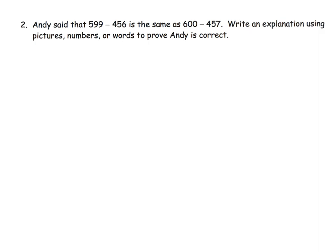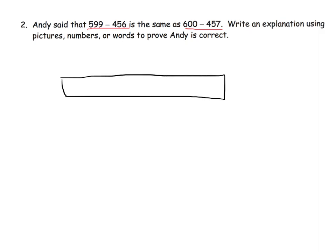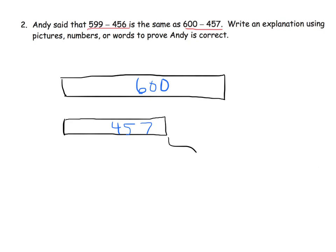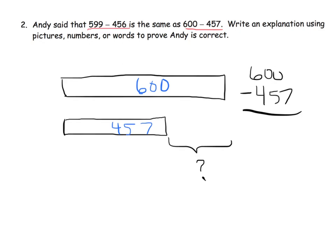Our last problem: Andy says that 599 minus 456 is the same as 600 minus 457. Let's start by drawing tape diagrams for 600 minus 457. Here's our 600, here's our 457, and the gap right here is the answer to 600 minus 457.